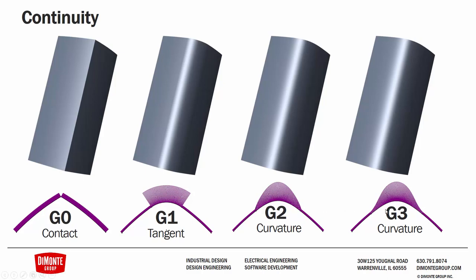Finally, this G3 curvature connection was created with a manually created surface using a spline connecting the two surfaces and then extruded. This has the smoothest possible connection, analogous to our second example where the limo driver slowly turns the steering wheel to negotiate the turn. What we're actually seeing is a more gradual acceleration of the curvature — we don't have that little bump.